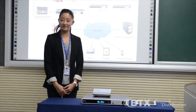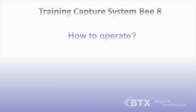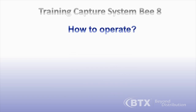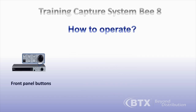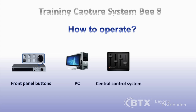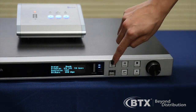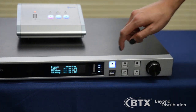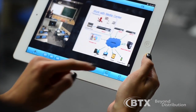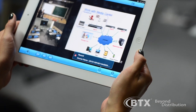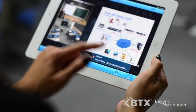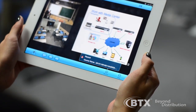So how does the B8 work? The B8 allows you to start recording in any way you're comfortable with. You can use its front panel buttons, a PC, a central control system, or even your own iPad. All you have to do is press the record button on the front panel or open the Reach Out program on your iPad when the training lecture begins. Then you can leave the rest up to the B8.